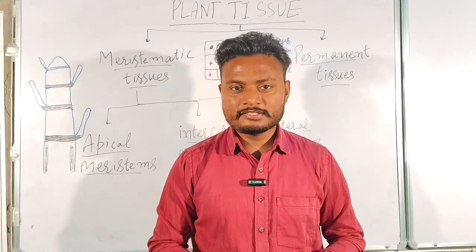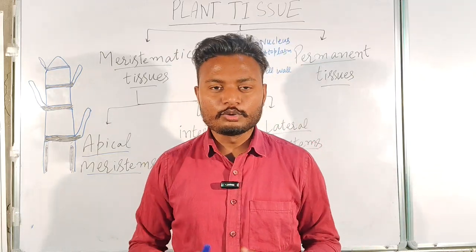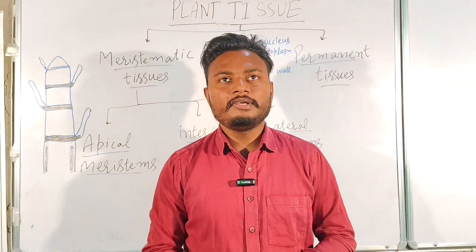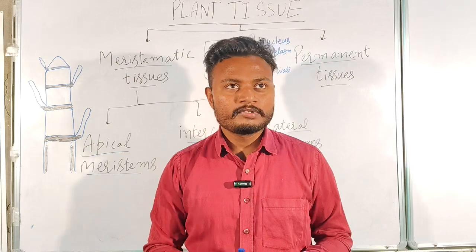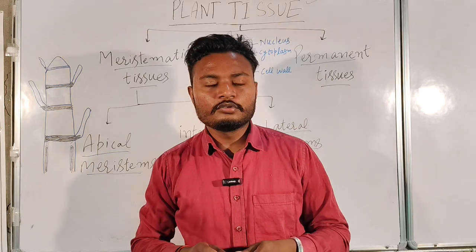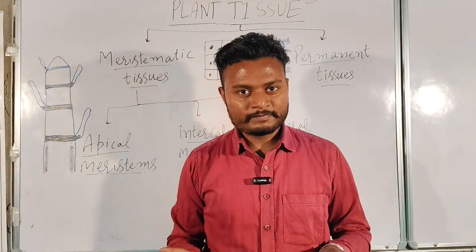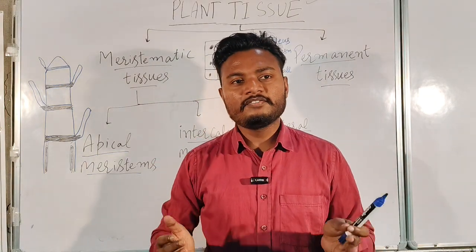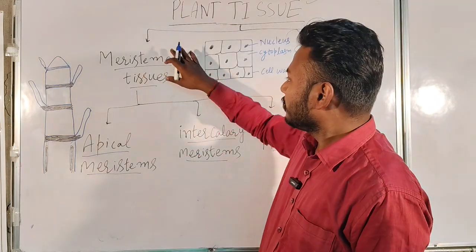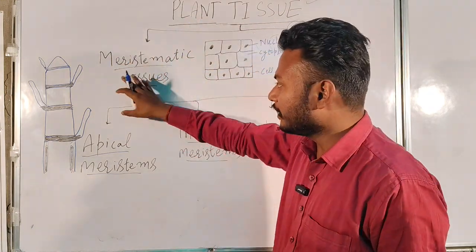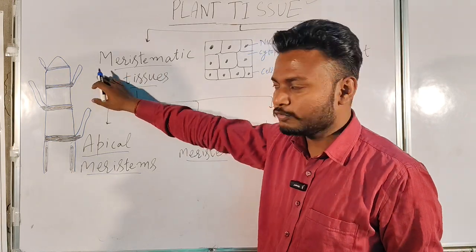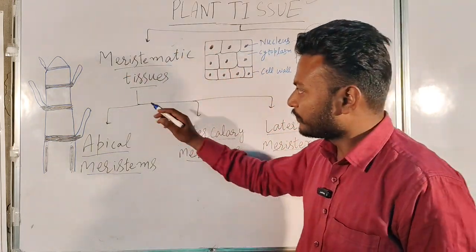Welcome to Sharma Logical Classes. Today I am going to discuss plant tissues. Tissue is a group of cells that perform similar functions and have similar structures. In plants, generally two types of tissue are found: the first one is meristematic tissue, and the second one is permanent tissue.